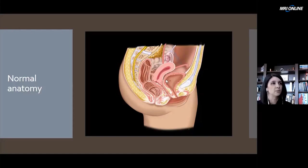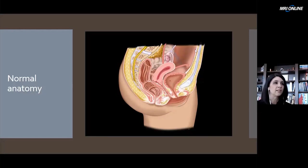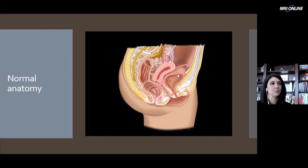The bladder — you want it to be nicely distended, and that's for two reasons. It's going to push any small bowel loops up and out of the way, because ultrasound can't see well through bowel loops. And it's also going to serve as a window, because ultrasound waves travel faster through fluid. So using that urine in a nicely distended bladder will help you to see the uterus right behind it.